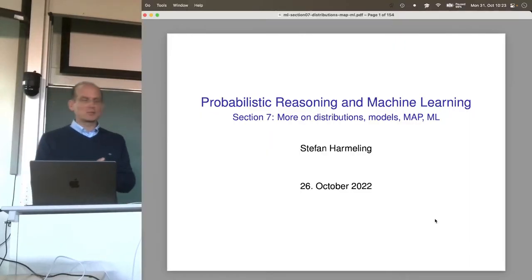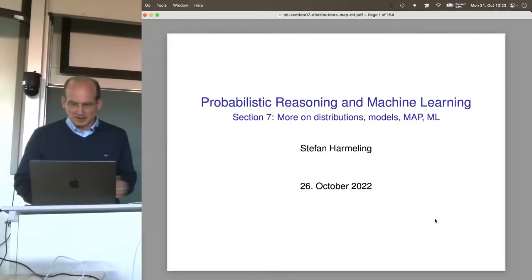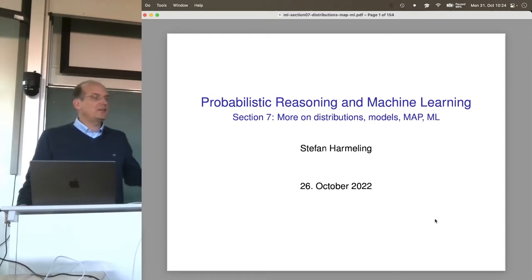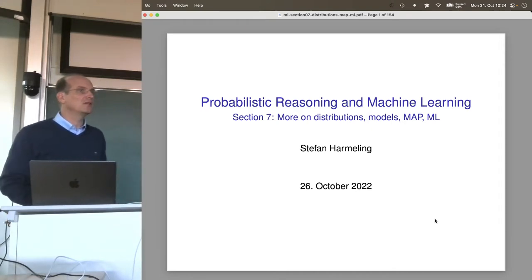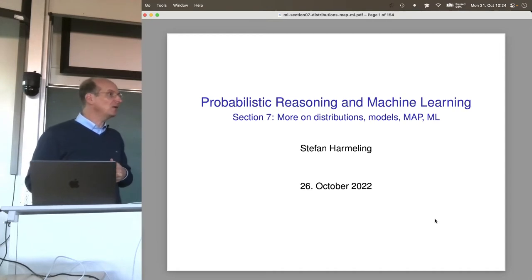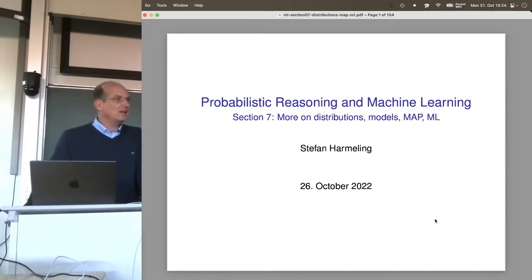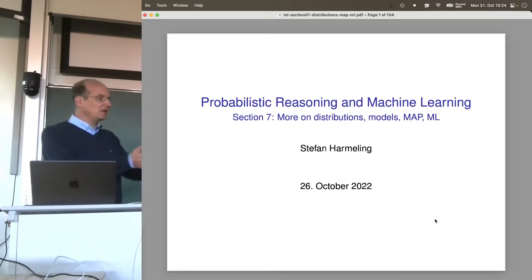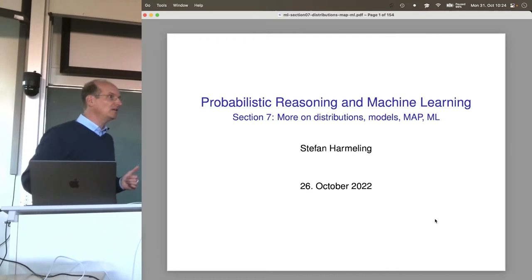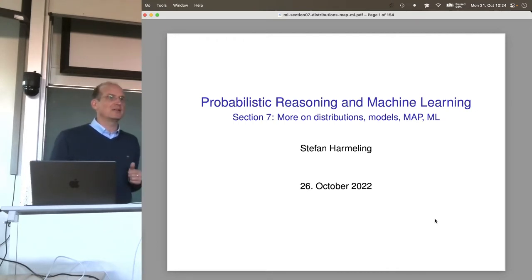Welcome everyone to our next lecture on probabilistic reasoning and machine learning. We continue with section 7. There's lots of material in this section. We introduced a couple more distributions — distributions for dice, for throwing dice several times. The more challenging ones were the Dirichlet distribution and the beta distribution, which are distributions not for modeling something we experience in the world, but for the parameters of modeling it.